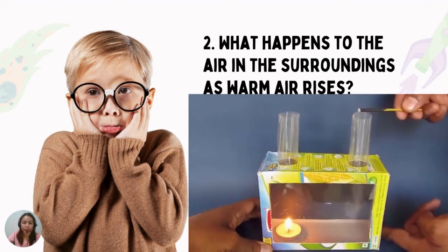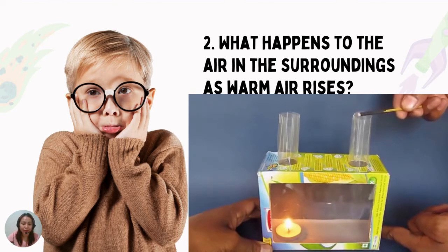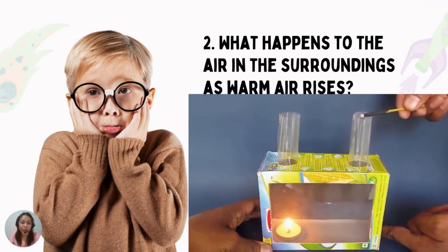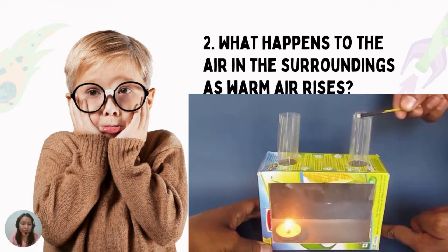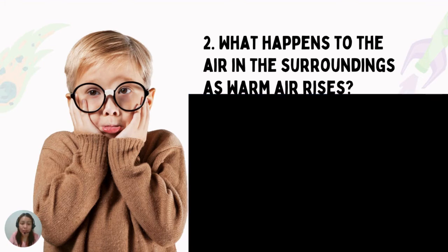So what happens to the air in the surroundings as warm air rises? As you can see from the previous activity, air in the surroundings is affected by rising warm air. First, the air above the candle becomes warm because of the flame — it rises. As warm air rises, the surrounding air will move toward that place. You cannot see the air, but the movement of the smoke from the incense shows the movement of the air.